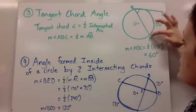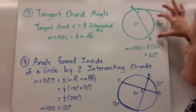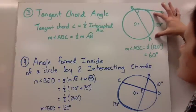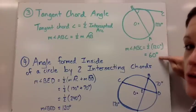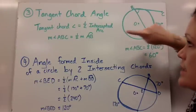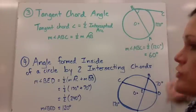And then the arc it's intercepting is 120 degrees. And so the measure of my angle is just half of that, which would be 60 degrees. So write down your formula, draw the picture in your notes.